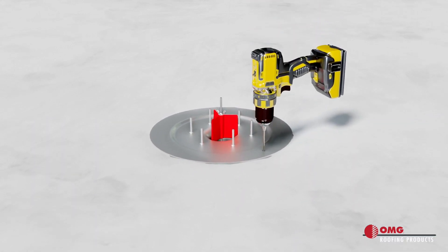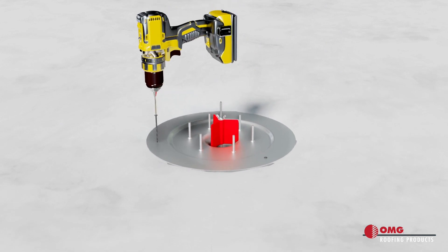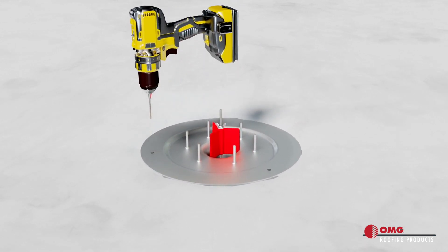Secure the drain flange to the roof deck or nailer using a minimum of three pan-headed fasteners, evenly spaced around the flange.